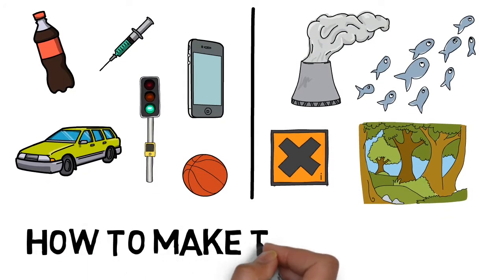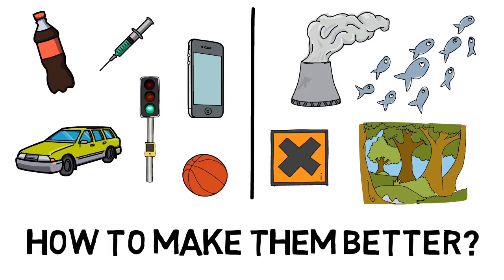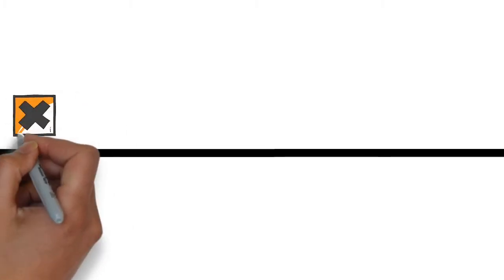So it's difficult to say whether plastics are good or bad, but there are definitely things we can do to help make them better. To do this, we need to look at how plastics are made and used and try to find areas for improvement.